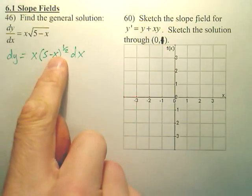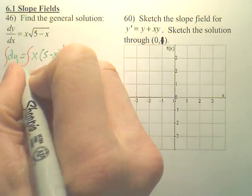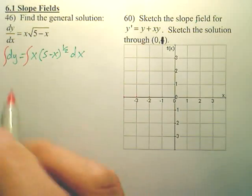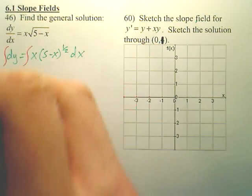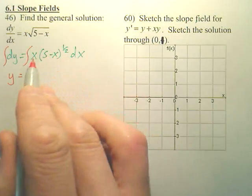It's easier to make it half powers than square roots. And the reason we moved it over, what we do now is we integrate both sides. The integral of dy is y, and then we're going to integrate this.